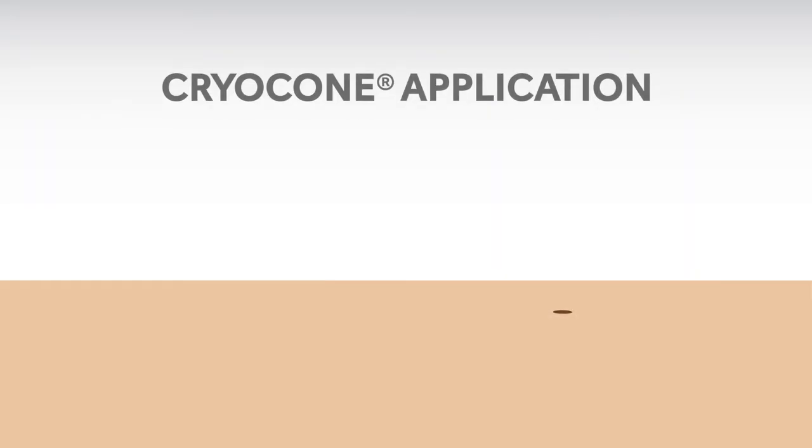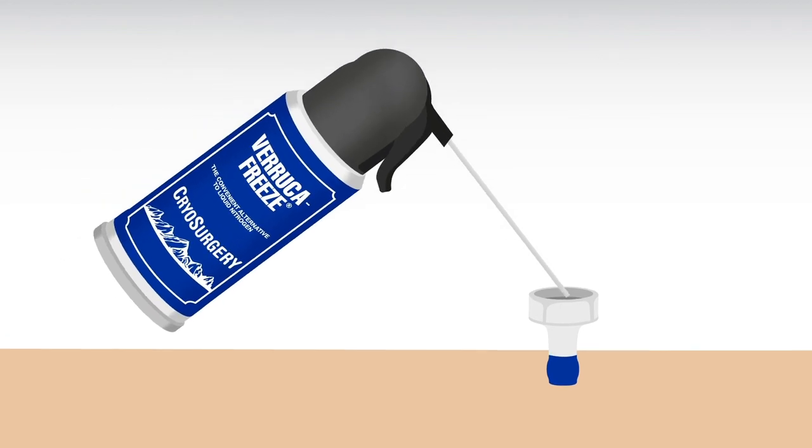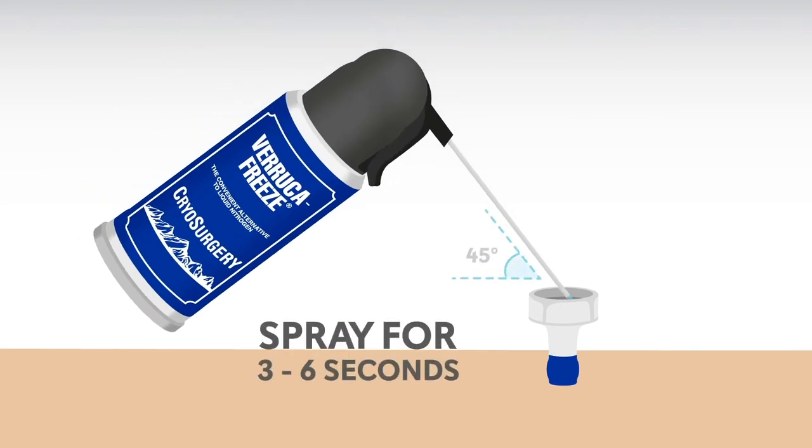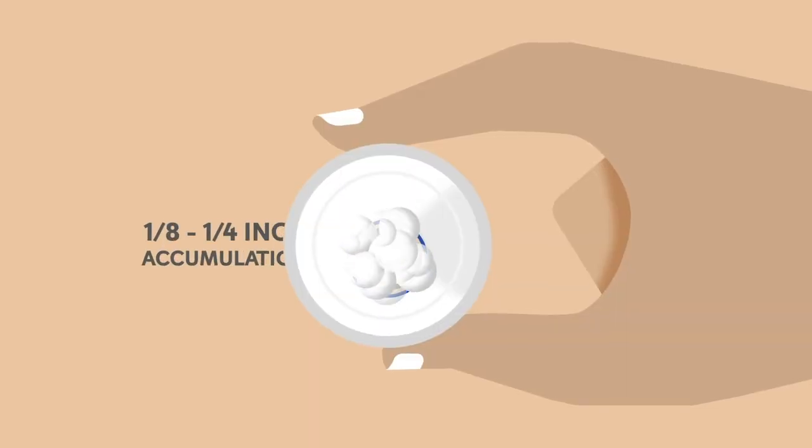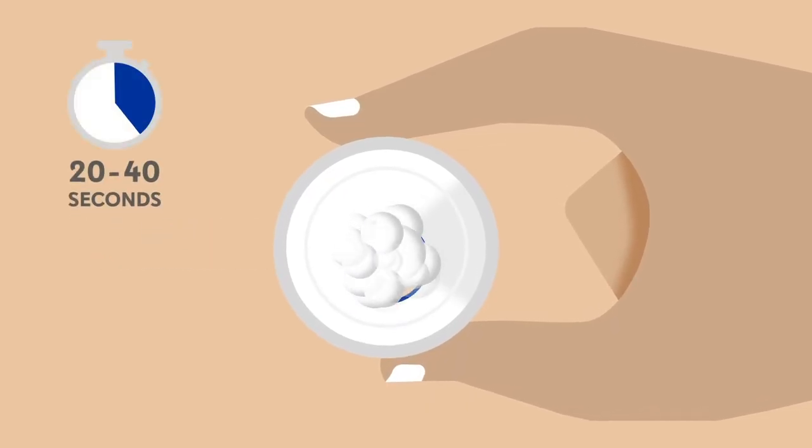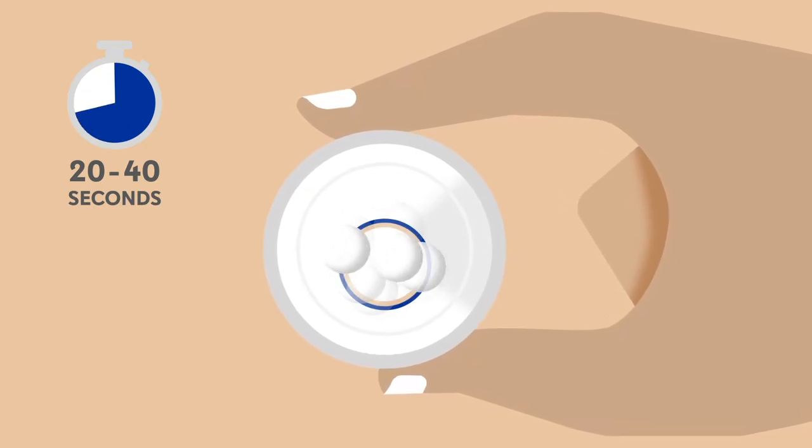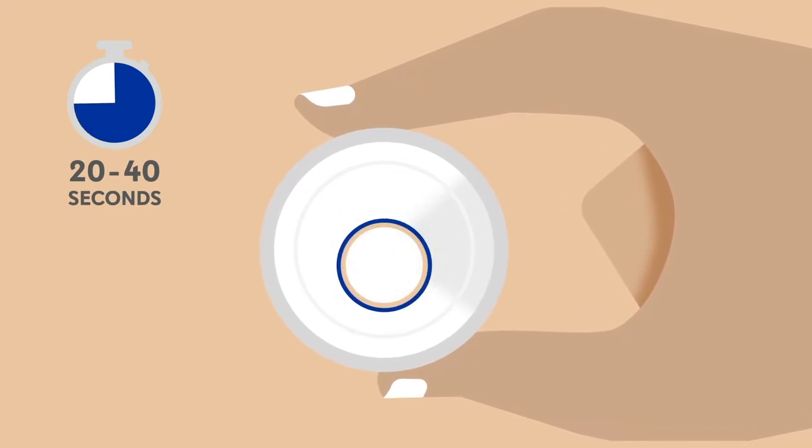When using the cryocone application, position the tip of the cone around the lesion and press firmly to create a seal. Lightly spray cryogen at a 45-degree angle against the inside wall of the cone for 3 to 6 seconds or until 1/8th to 1/4 inch of accumulation has occurred. Continue to hold the cone firmly in place for 20 to 40 seconds until cryogen has completely evaporated or boiled off.